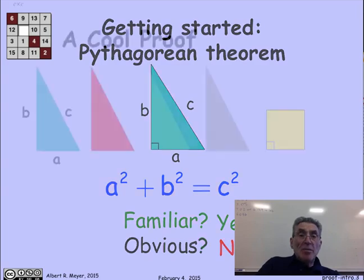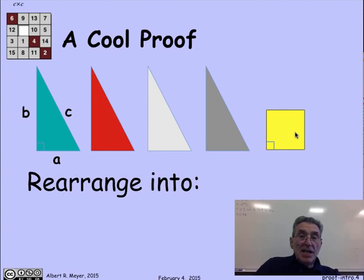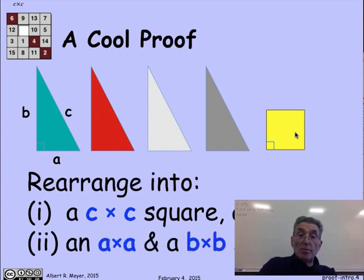So let's look at one of my favorite proofs of the Pythagorean theorem. There are four triangles that are all the same size, four copies of this ABC triangle, which we've put in different colors to distinguish them, and a square, which for the moment is of unknown size. The proof will consist of taking these four shapes and reassembling them so that they form a c by c square first, and then finding a second arrangement so that they form two squares, an a by a square and a b by b square.